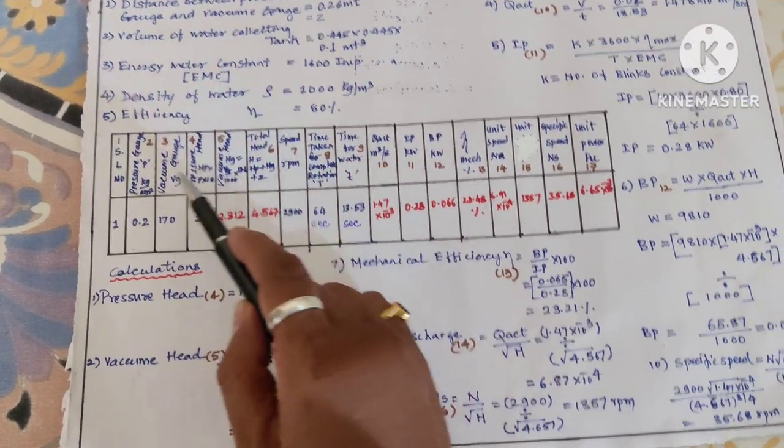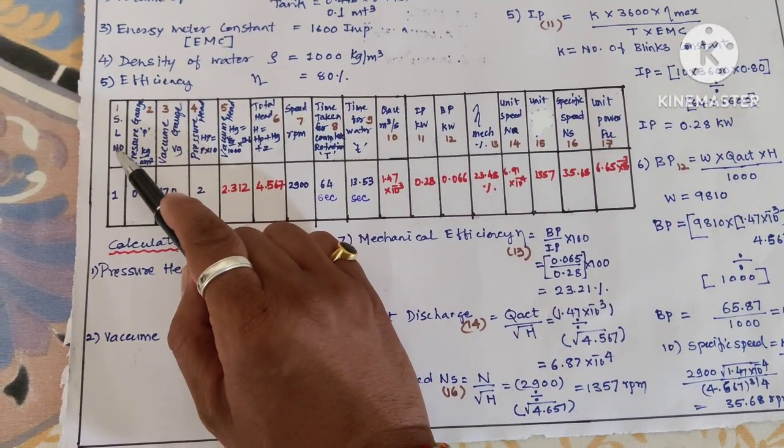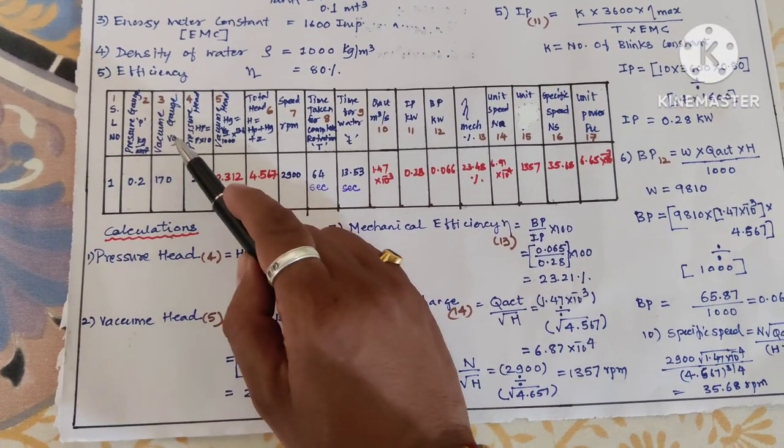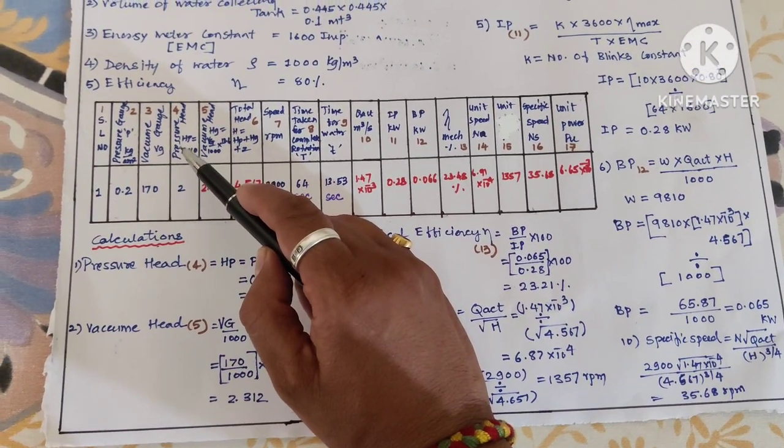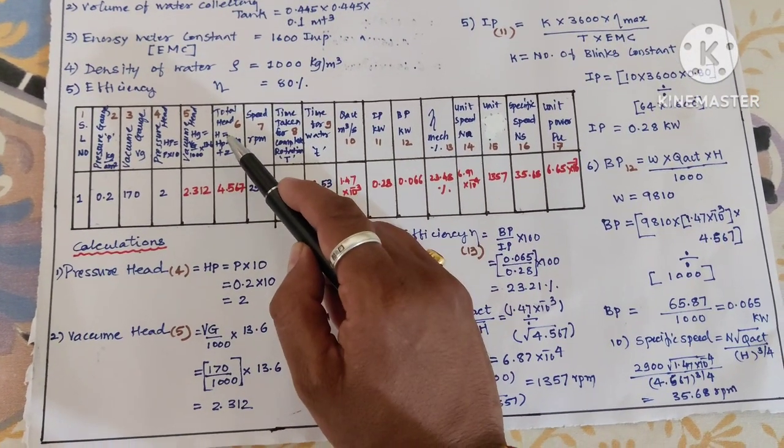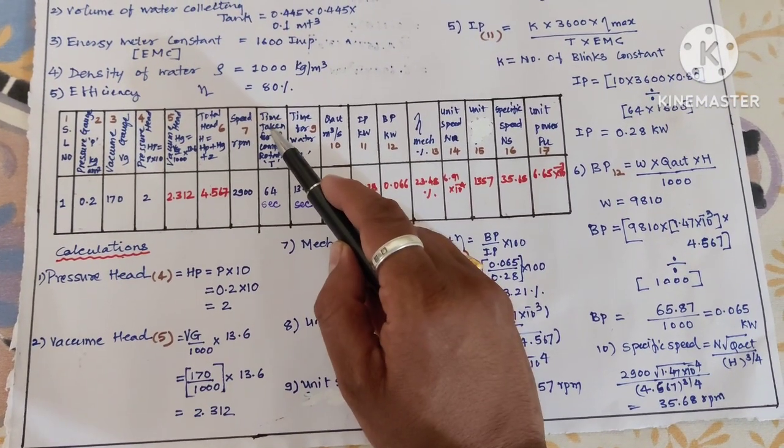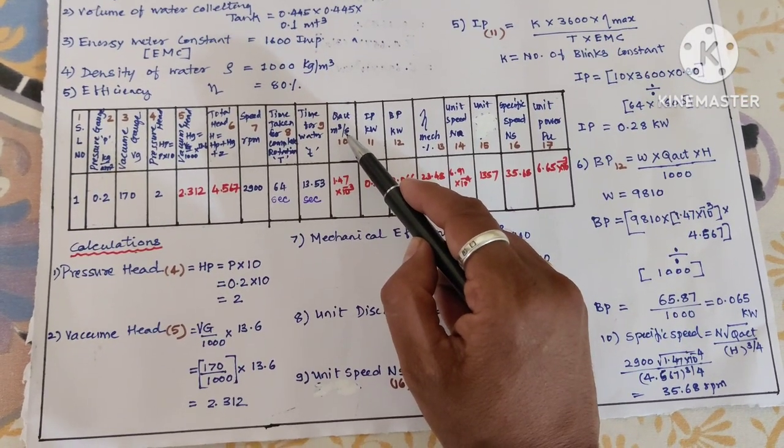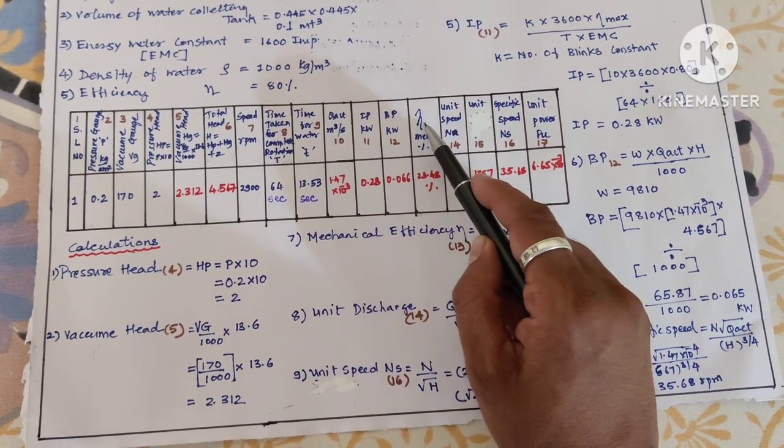Now if we move to the next portion, I have made a tabular column which consists of: serial number, pressure gauge reading (denoted by P), vacuum gauge reading (denoted by VG), pressure head, vacuum head, total head, speed, time taken for blinks, time taken for water, Q actual (actual discharge), indicated power, brake power, and efficiency.